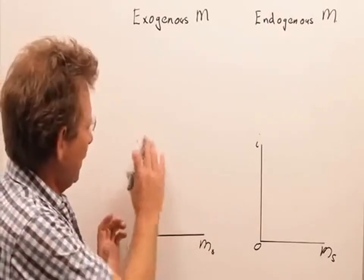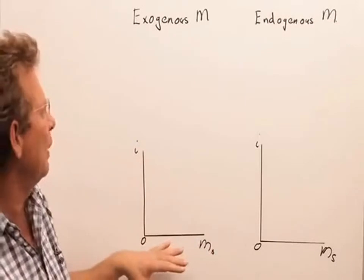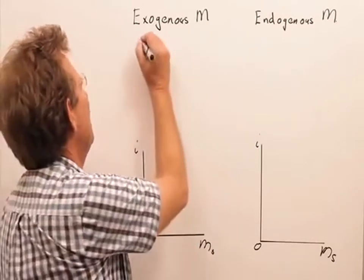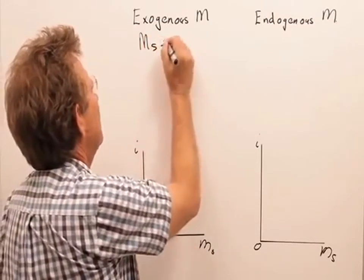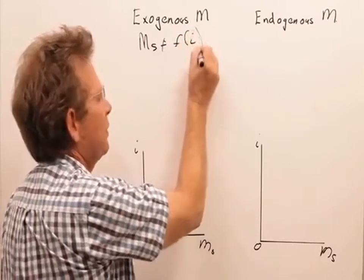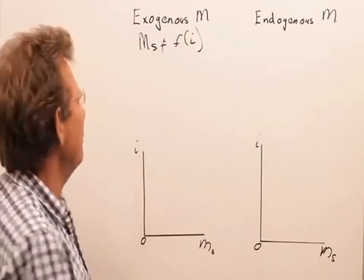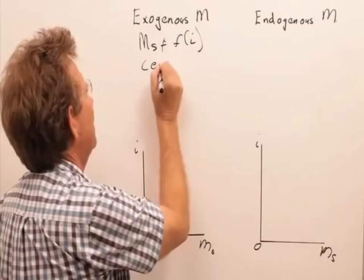Your model is where you have the interest rate and the money supply. What we are saying is that the money supply is not a function of the interest rate. It is determined independently by the central bank.